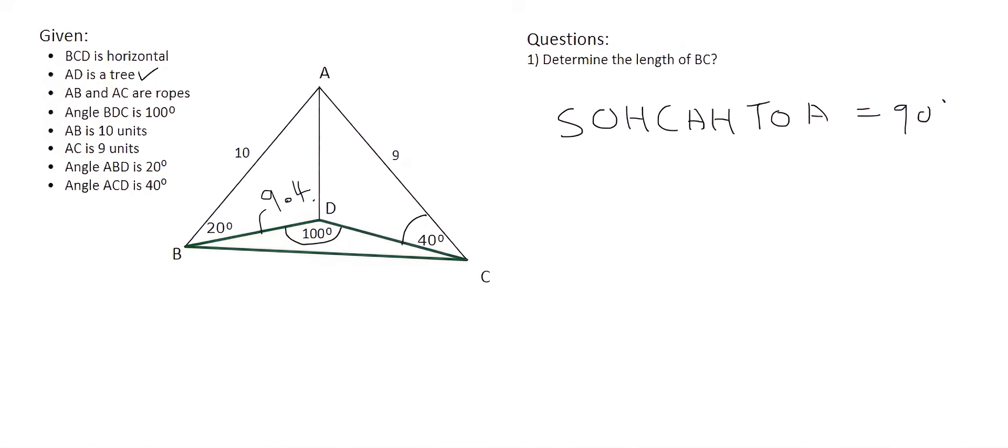Now that 9.4 is a length in this triangle over here as well, and so now that triangle has more information. However, we still don't have enough. We only have one angle and we only have one side. Usually that is enough information if it's a 90 degree triangle, but to be able to use the sin or the cos rule, we need at least one other piece of information.